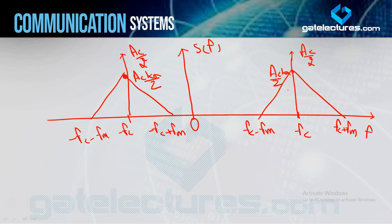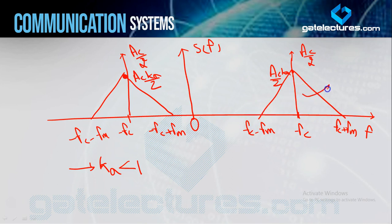There is an important point: the amplitude AC/2 from the impulse is kept higher than AC kA / 2. This gives us the key observation that kA should be less than 1. We will analyze further why kA must be less than 1 and its significance, but for now keep in mind: amplitude sensitivity should be less than 1.